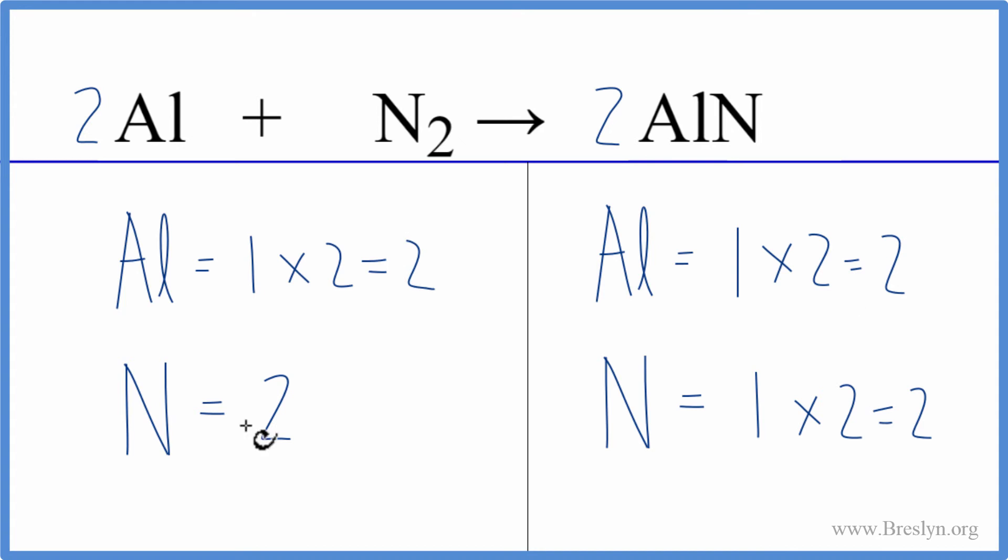So now everything is the same on both sides of the equation, and we're done. This equation is balanced. This is Dr. B with the balanced equation for Al plus N2 yields AlN. Thanks for watching.